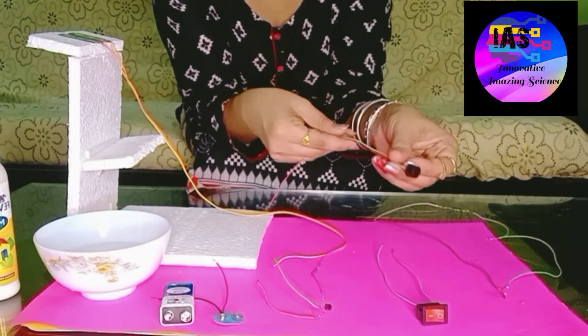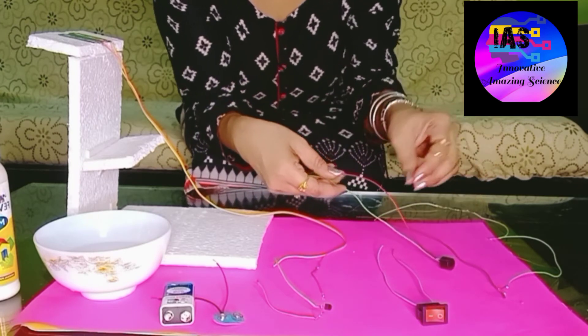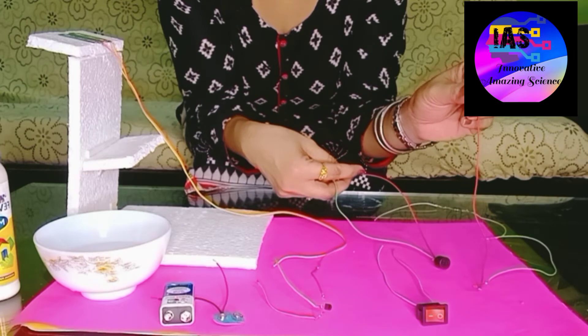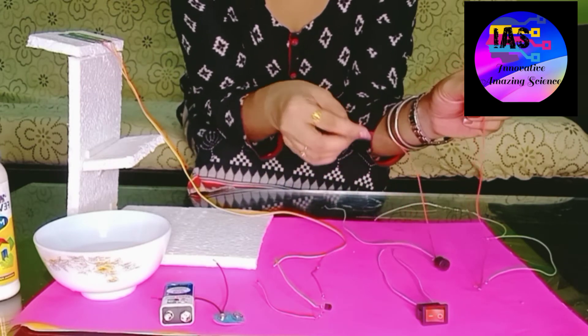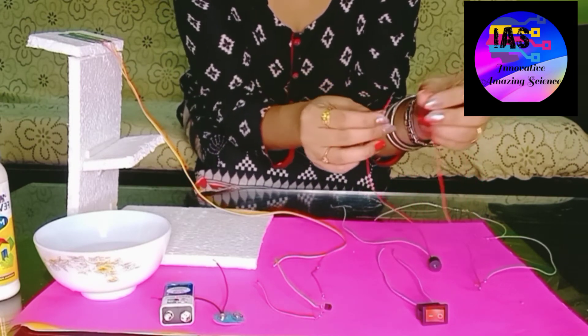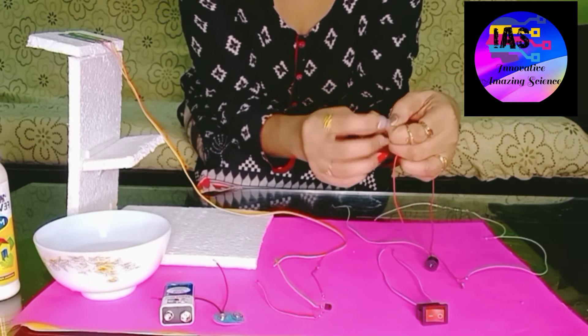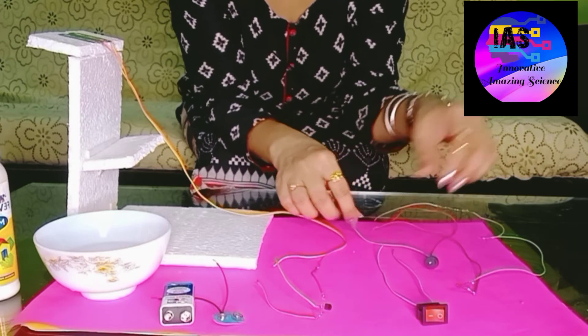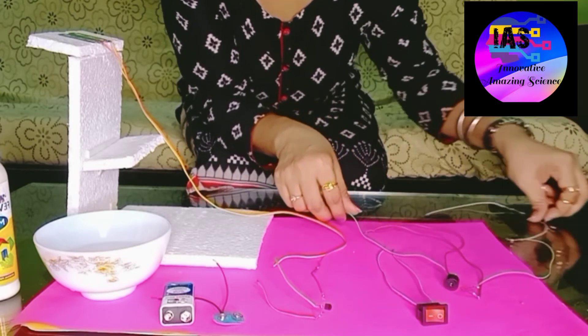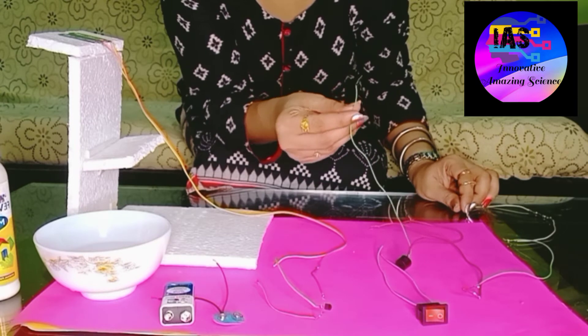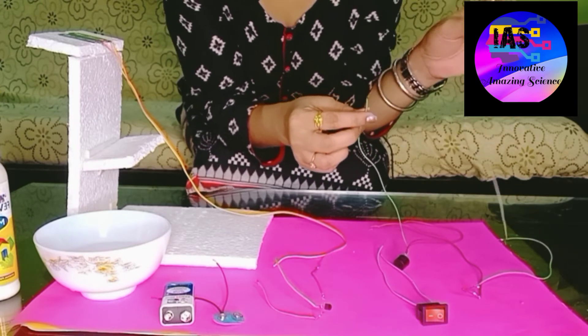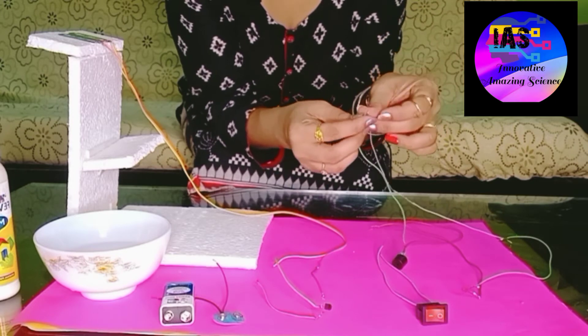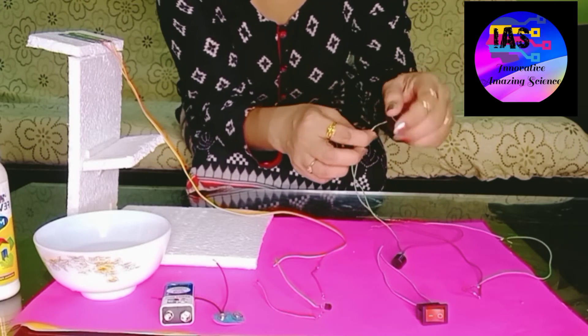Now I'll take this buzzer. To this buzzer, this red one, which is the positive end of the LED, I'm going to fix with the red one, the positive one of the buzzer, and twist it. And this green one, I'm going to fix to the other end of the resistance and twist it.